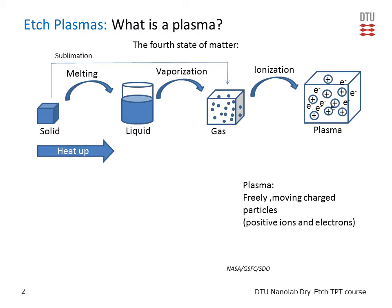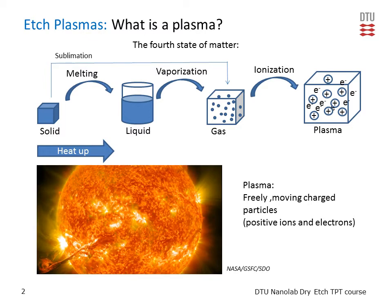An example of that is the stars. The stars are very hot and the plasma temperature is typically between 4,000 and 20,000 Kelvin depending on the gas. That is a very high temperature, and if you imagine putting your samples into that, they will definitely evaporate and turn into ions as well. So this is not the kind of plasma we are using.